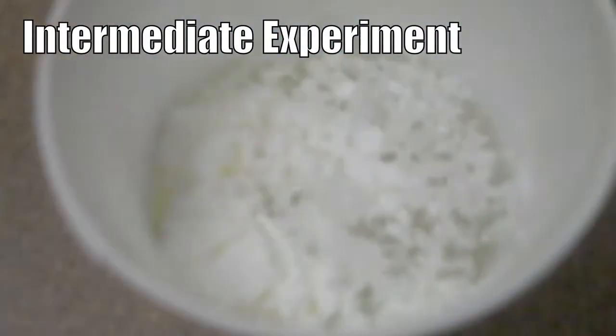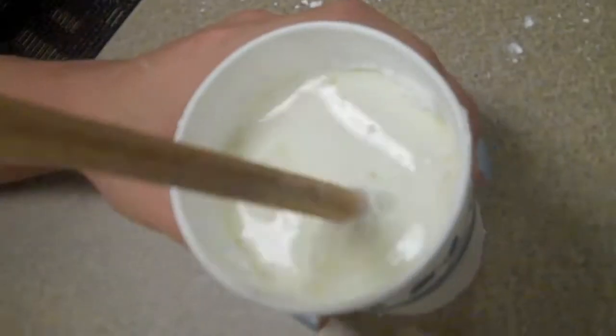Our first intermediate experiment is to figure out how much cornstarch and water we need to get the right mixture to walk on. We kept adding more cornstarch to the water until we got the right mixture.